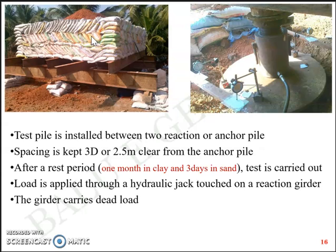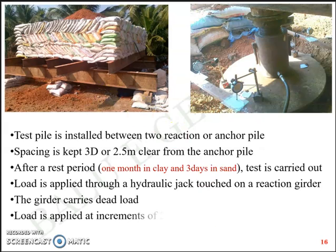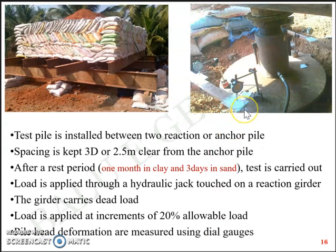For example, let's assume the expected ultimate load for the pile load test is 100 tons — you will have to place at least 140 tons on the kentledge system so that it provides the reaction onto the pile. The load is actually applied in increments of 20% of the allowable load. Assuming the allowable load is 100 tons, initially you apply 20 tons and allow the pile head deformation to be monitored, then apply another 20 tons, and so on. The loads are applied in increments and pile head deformations are measured using dial gauges.